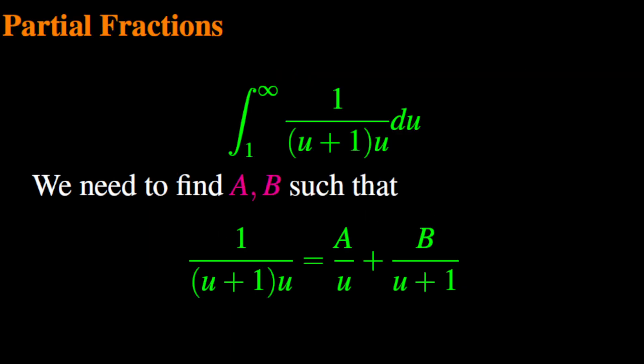In order to find the antiderivative of the function 1 over u times u plus 1, we need to use partial fractions. As you can see, this function is a rational function. Its numerator is the constant 1, and its denominator is the product of two irreducible polynomials, u and u plus 1. Therefore, we need to decompose this function into a sum of partial fractions. From partial fraction theory, we know that 1 over u times u plus 1 can be expressed as a over u plus b over u plus 1.